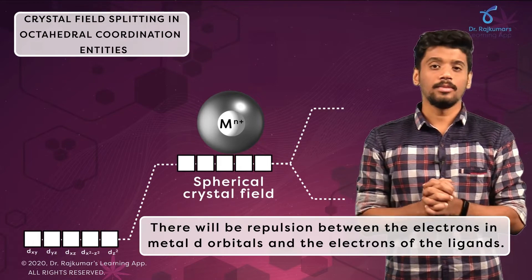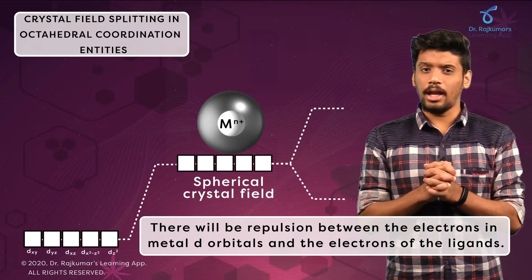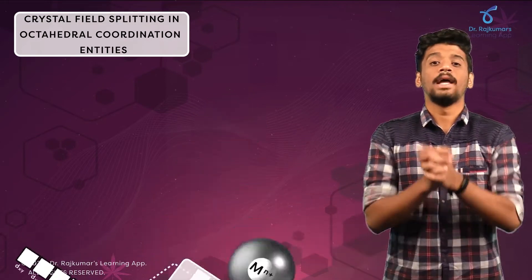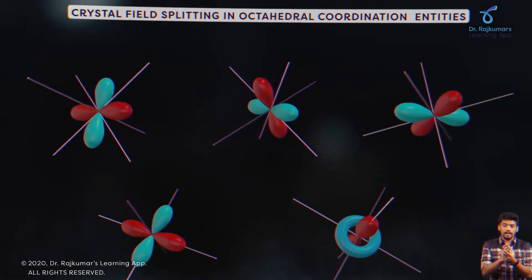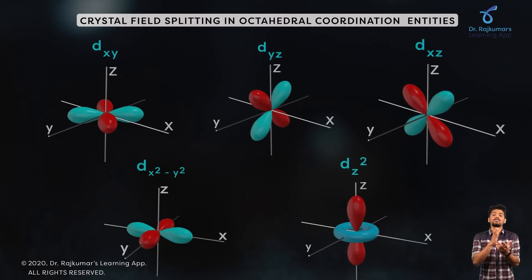Now this seems a bit confusing, so let me explain in detail. In an octahedral complex, all the ligands are present on the axes, that is, x, y, and z axes.